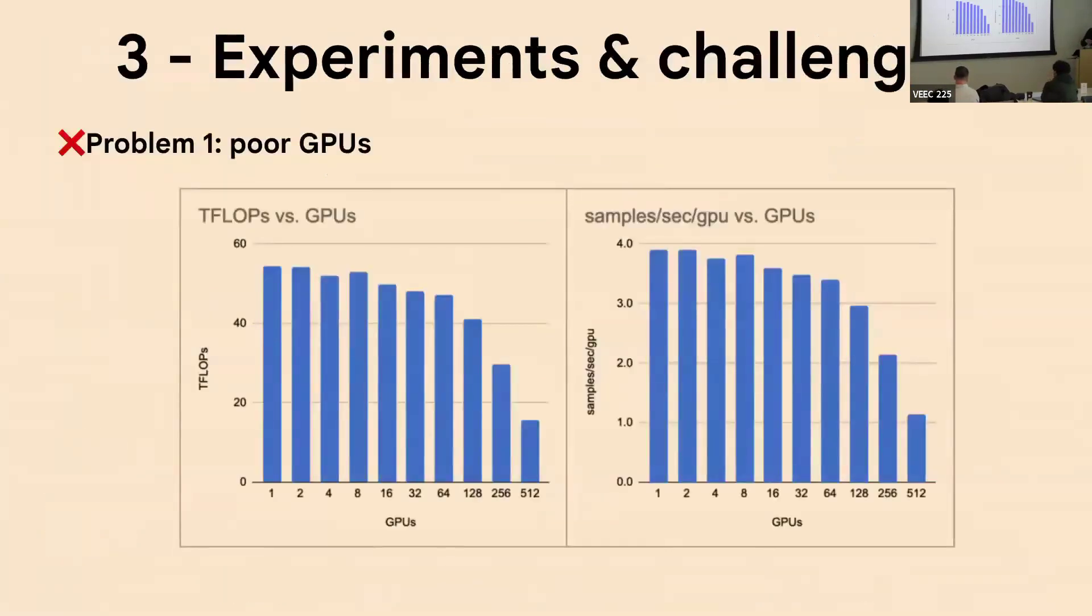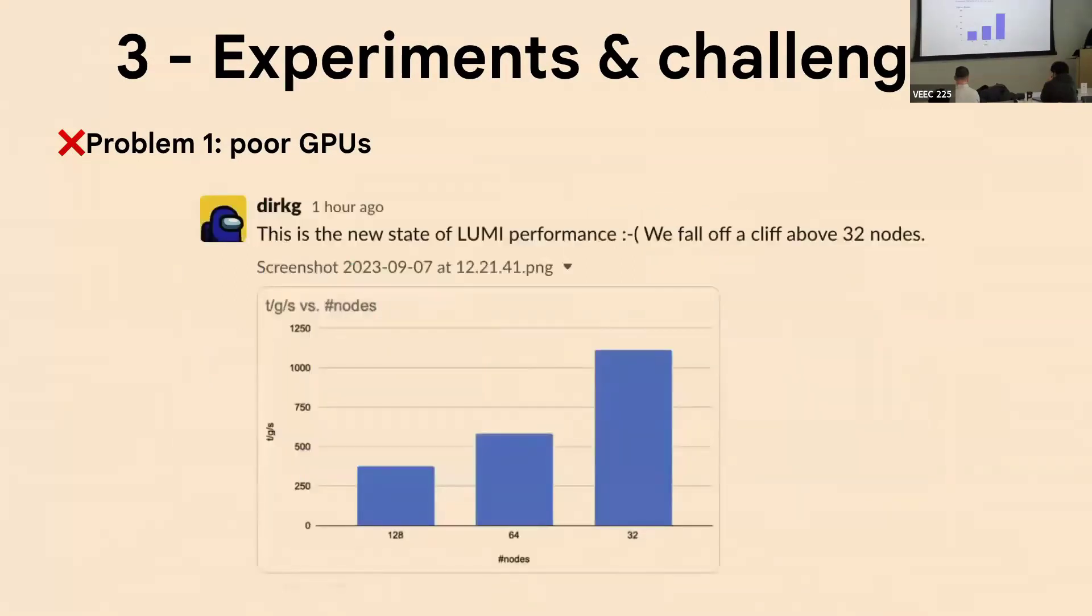So now we have this set up, and we could move on to experiments, and I'm going to talk about some of the challenges we faced. The biggest one being poor GPUs. So this is how the GPUs scaled in TFLOPs. When we increased the number of GPUs, the TFLOPs per GPU would just drop radically. This is equivalent to the samples per second per GPU dropping really quickly. So essentially, the more GPUs we used, the more of them would just be idle and not do anything, and we would fall off a cliff for all of those projects.